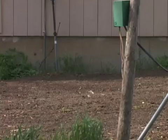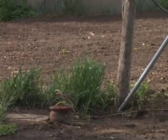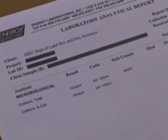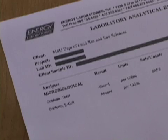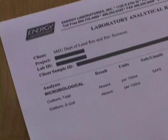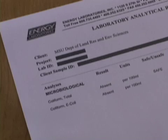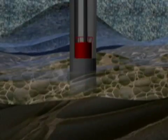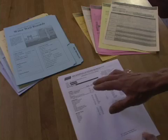Wells that are found to be contaminated with bacteria are often shock chlorinated to help address the issue. If E. coli or coliform bacteria are reaching the well due to faulty construction or a contaminated source, shock chlorination will only kill the bacteria temporarily and the bacteria will return. In the case of recurring E. coli or coliform contamination, the source of contamination needs to be addressed or a treatment system should be considered. See the extra chapters on interpreting test results and treatment for further information.